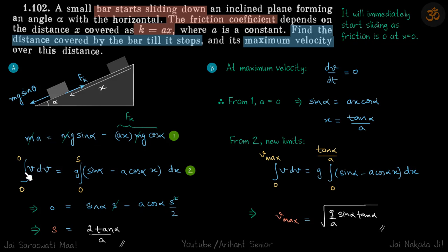So we'll just integrate both sides to find the distance. Limits of velocity: it started at zero and stopped also eventually, so limits of velocity are zero to zero and displacement is zero to s. So we got our distance.